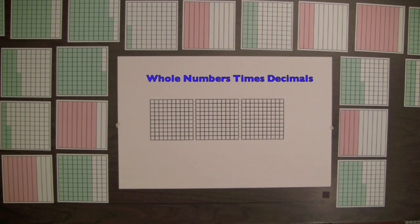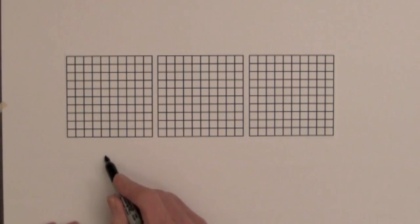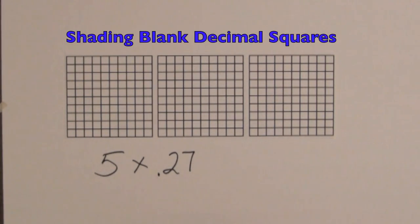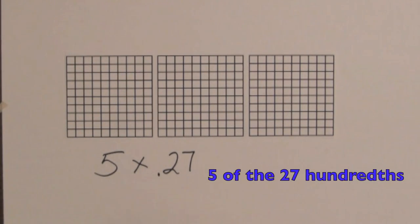A whole number times a decimal, such as 5 times 27 hundredths, can be illustrated by shading blank decimal squares. 5 times 27 hundredths can be thought of as 5 of the 27 hundredths.